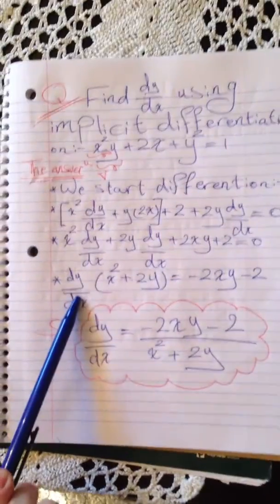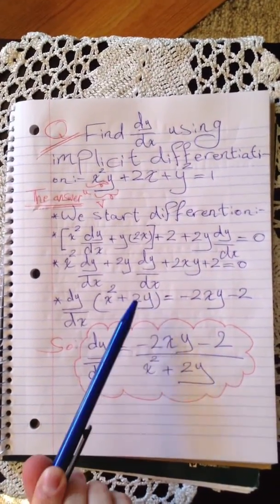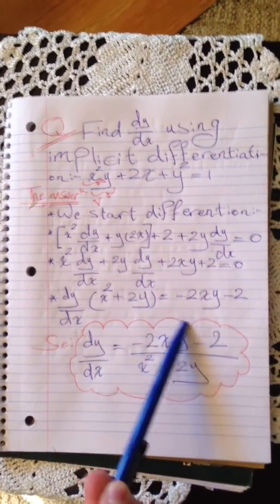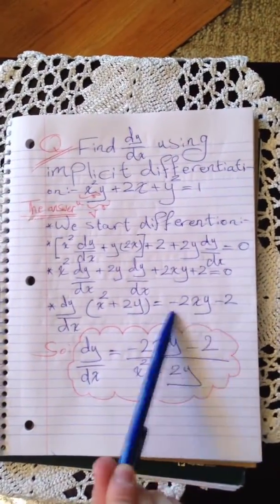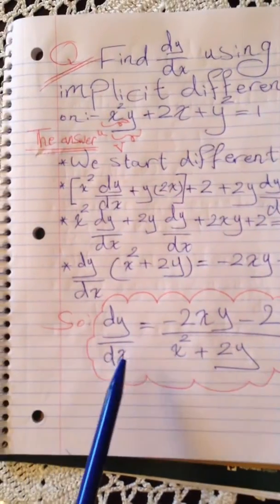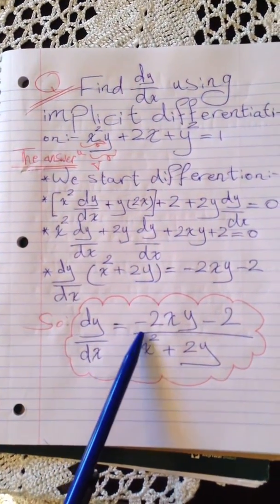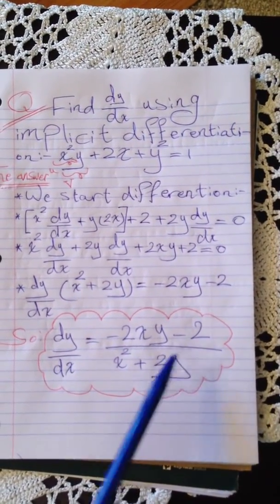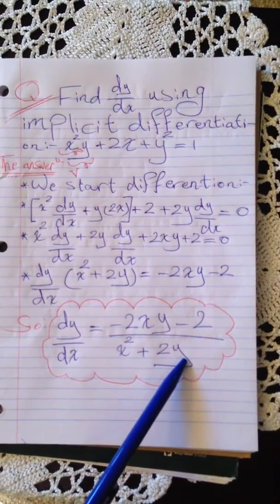So we have dy/dx multiplied by x² plus 2y, which we bring as a denominator. Our final answer is dy/dx equals negative 2xy minus 2 over x² plus 2y.